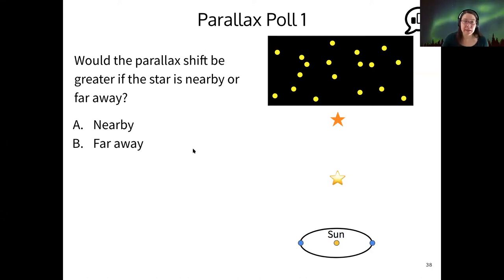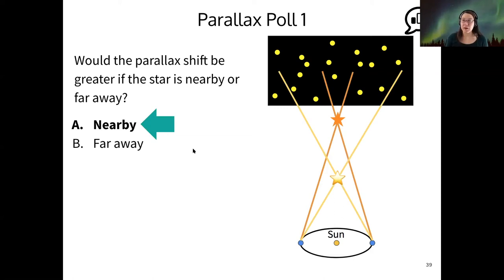And indeed, the nearby star has a greater apparent shift on the sky, greater parallax shift. So we definitely can see we can use parallax shift to measure distance.